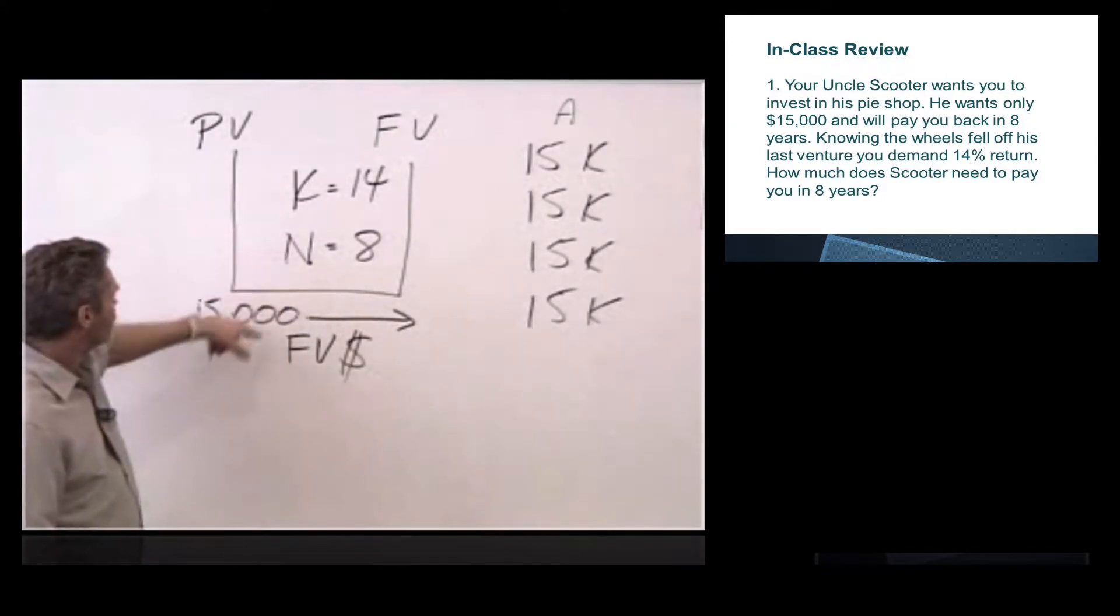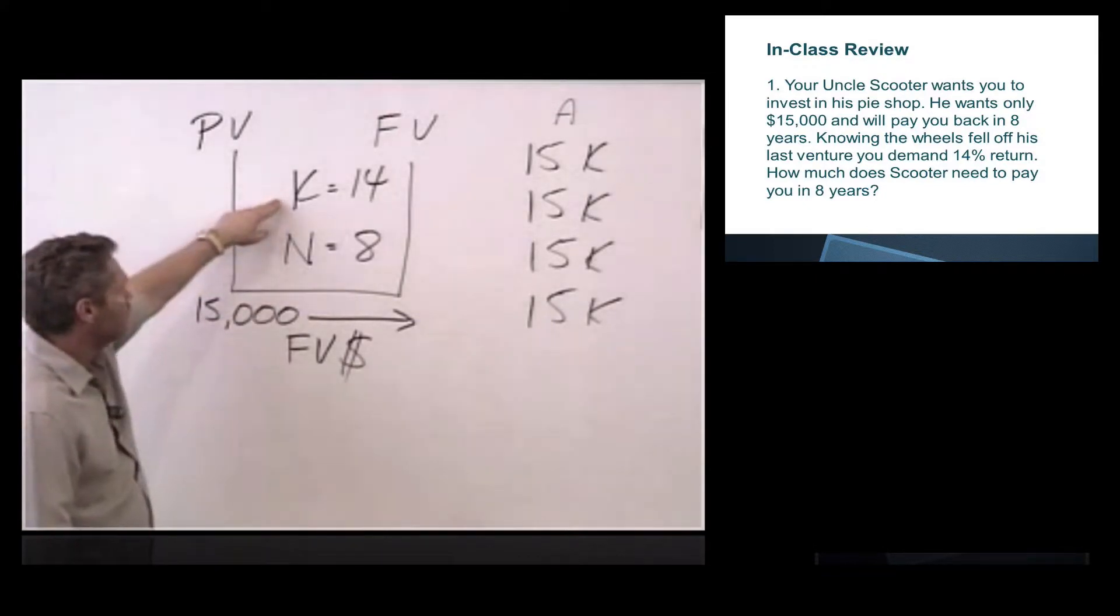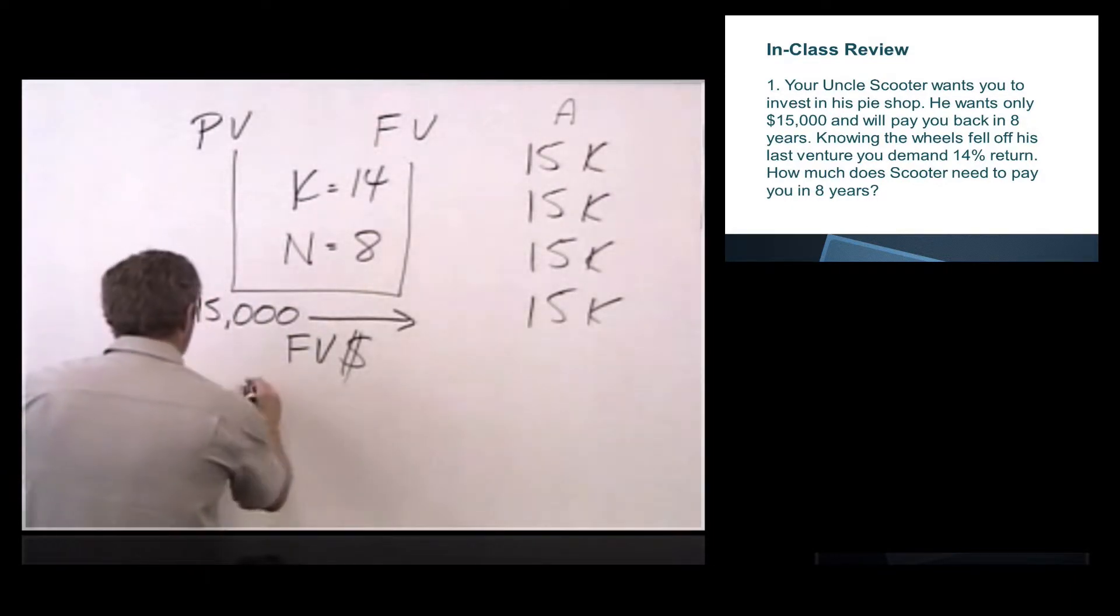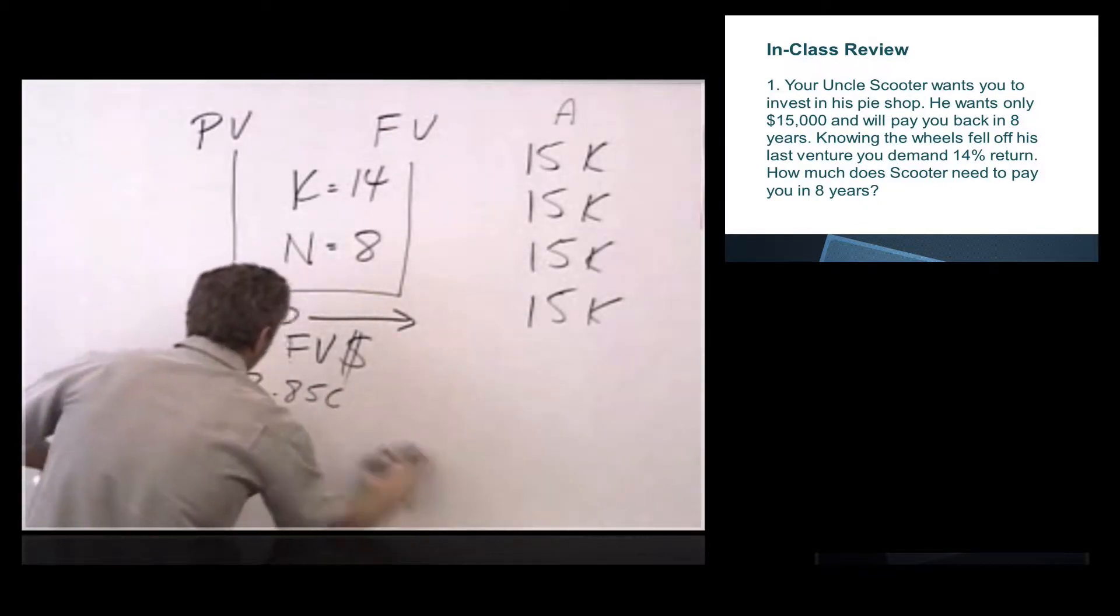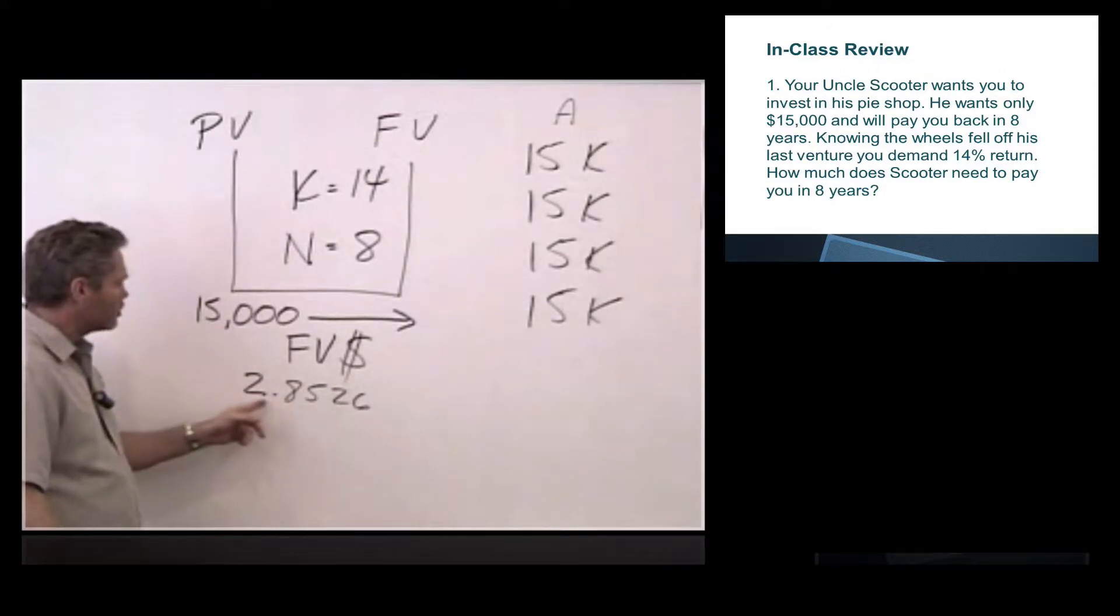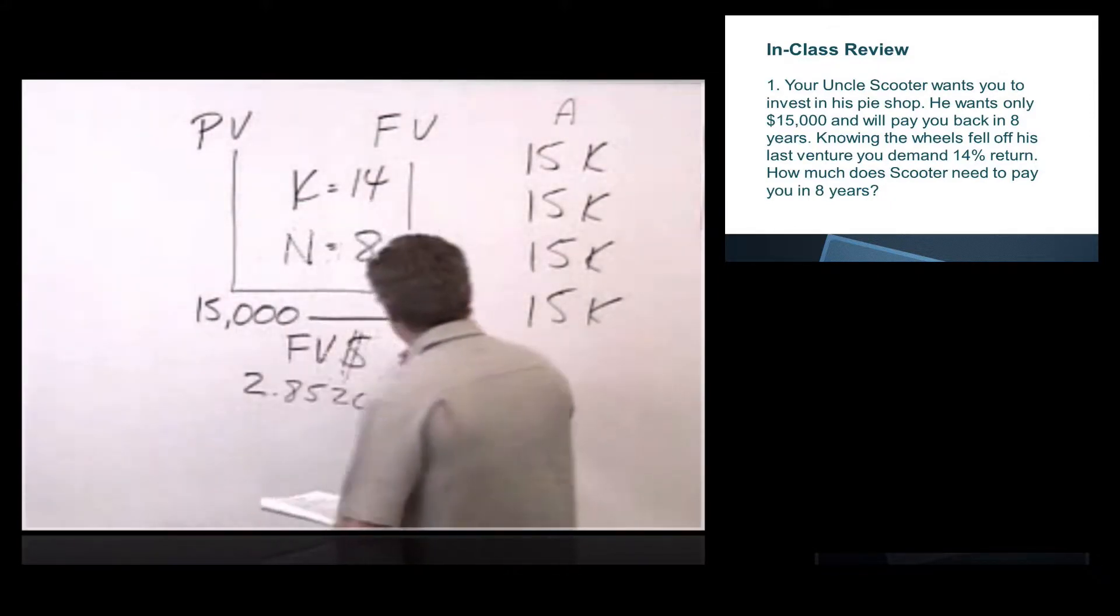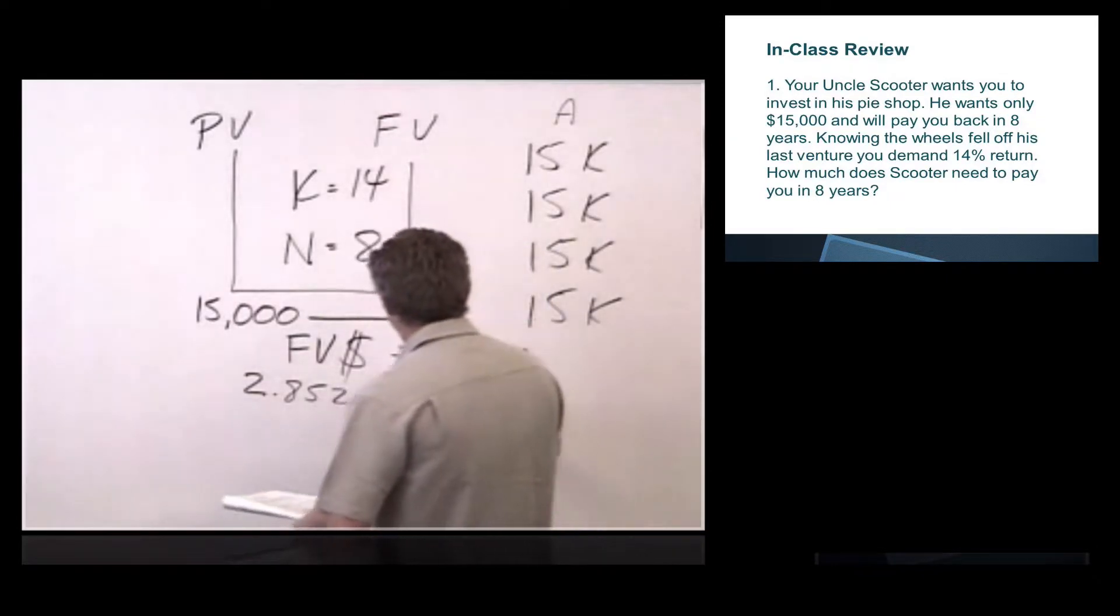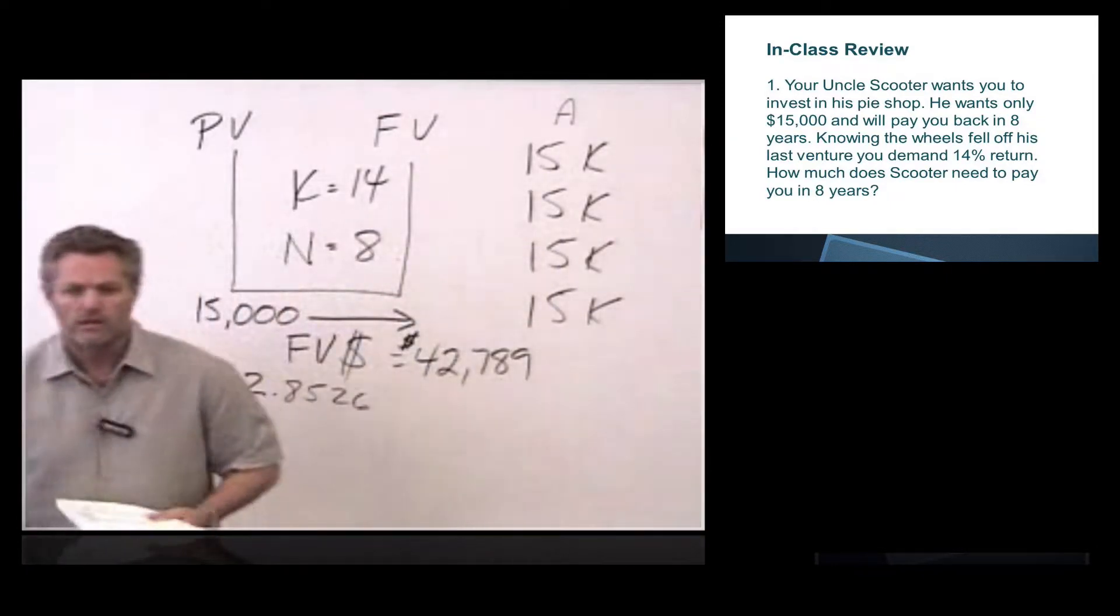So we're going to use future value of a dollar. We're going to look that up. Future value of a dollar, slide across the top, K equals 14, down to an N of eight. And we look up that factor. And that factor we see is 2.8526. And then we're going to multiply $15,000 times 2.8526 to get an answer of $42,789. That's how much Uncle Scooter needs to pay you back.